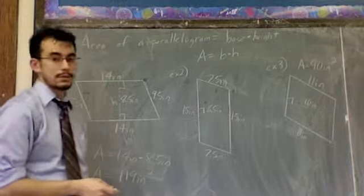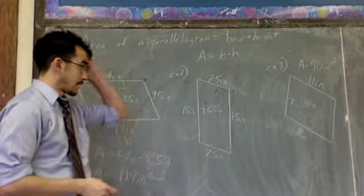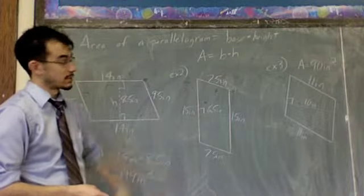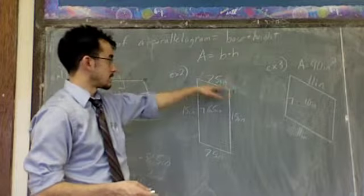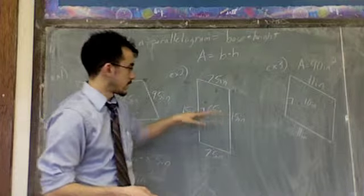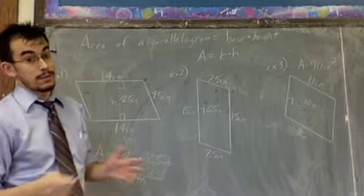Looking at the second example you see on the board, I've got another parallelogram. Again, I want to find the area. I've got all the measurements. I see this side is 15 inches, 7.5 inches, 15 inches, 7.5 inches, and this dotted line here is 6.5 inches. So you've got to be careful.